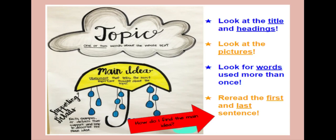Let's take a second to discuss our text, Country Animals, using our anchor chart. First, let's start with the main topic of the text — one or two words about the whole text. Today's whole text was about animals. Now let's discuss the main idea, which is more specific than the topic. The topic of our book is animals, but the main idea is that some animals live in the country. Our book was specifically about animals that live in the country.